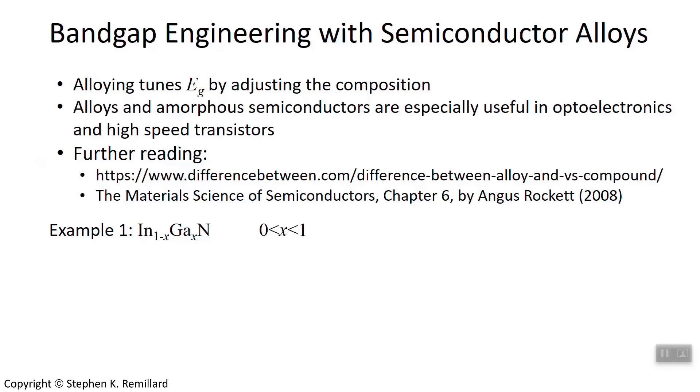Semiconductor alloys are especially useful in optoelectronics, where you may need to adjust the band gap, and it's controlled with the alloying ratio. They're also very useful in high-speed transistors, such as HEMT, High Electron Mobility Transistors, which we will be talking about a lot later, also known as modfets.